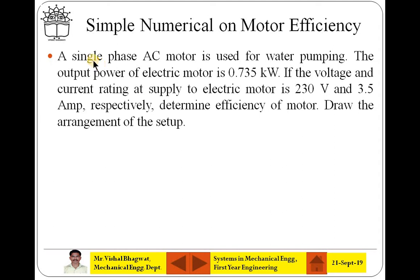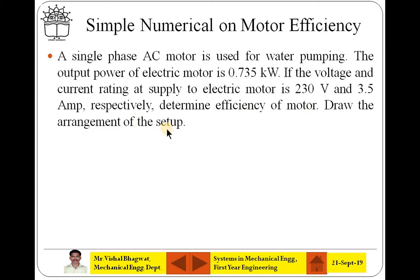Here a single-phase AC motor is used for water pumping. The output power of the electric motor is given as 0.735 kW. The voltage and current rating for the electric motor is 230V and 3.5A. Determine the efficiency of the electric motor and draw the arrangement of the setup.